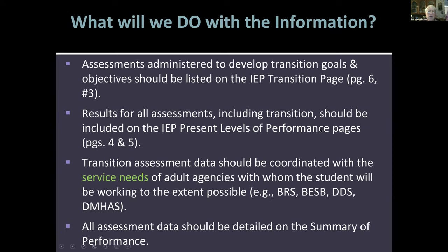If a student always needs prompting to get work in, to get to things on time, to remember certain strategies, they are not going to be successful after high school — because we don't have prompting in employment or in college. Students need to learn to be independent wherever possible. When you go into a PPT meeting looking at transition assessment, the first thing to look at is page six, number three, where they list the transition assessments used to develop the transition goals and objectives in that particular IEP. Only the ones used for the current IEP should be listed there.